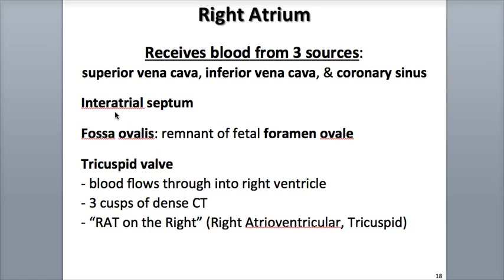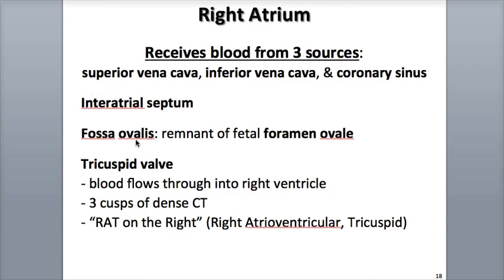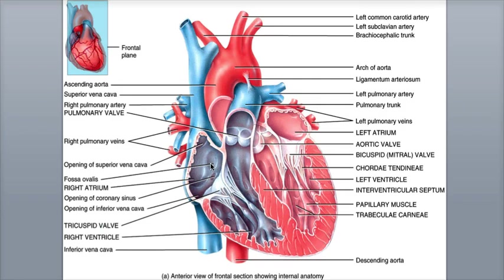In between the right and left atria is a thin dividing wall called the interatrial septum, located right between the right atrium and the left atrium. Located on the septum is a small indentation called the fossa ovalis, which is what was left behind when an opening called the foramen ovale closes after birth. Deoxygenated or oxygen-poor blood flows from the right atrium into the right ventricle through the tricuspid valve, also called the right atrioventricular valve, or the right AV valve.